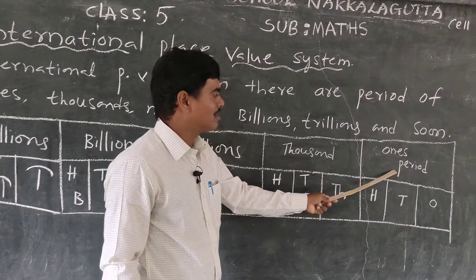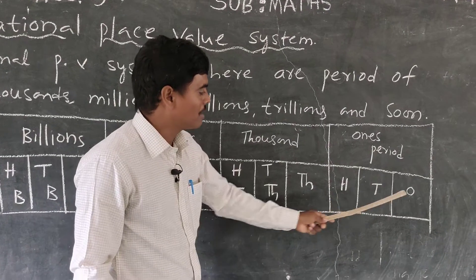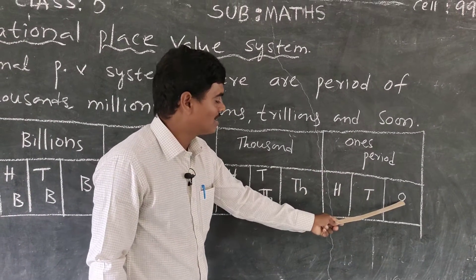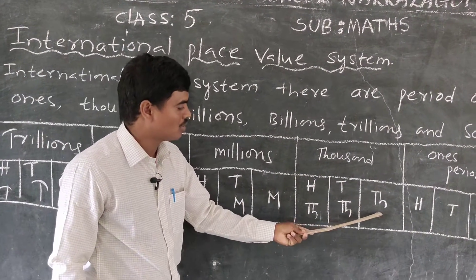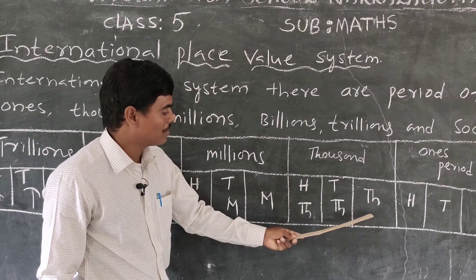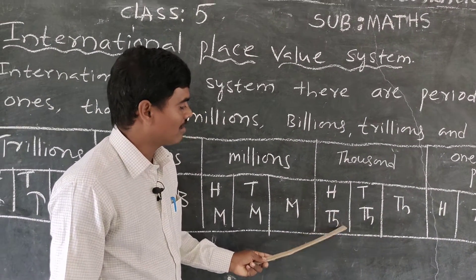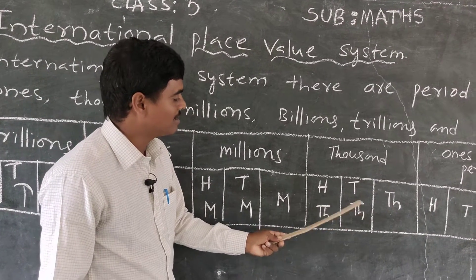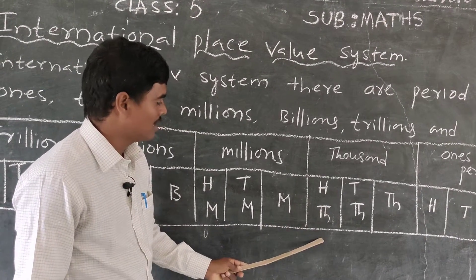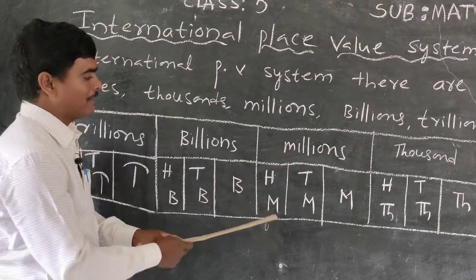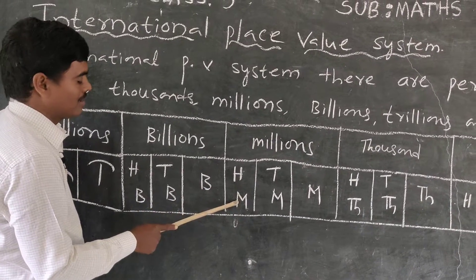The first period is the ones period. The ones period has three places: ones, tens, and hundreds. The second period is the thousands period, which also has three places: thousands, ten thousands, and hundred thousands. The third period is the millions period: millions, ten millions, and hundred millions.